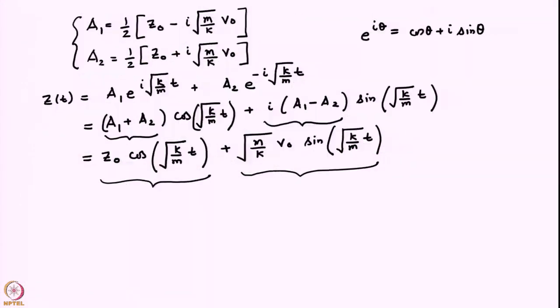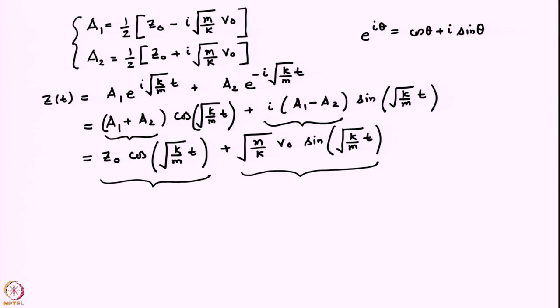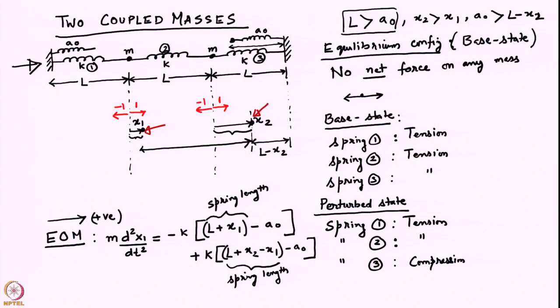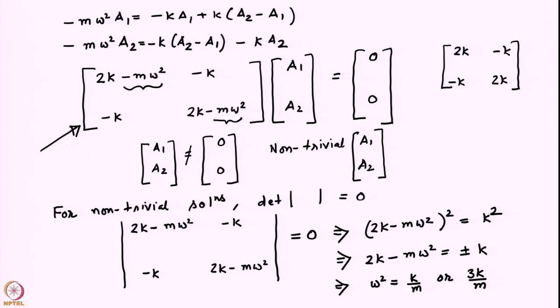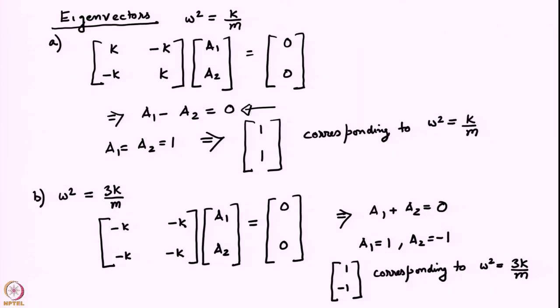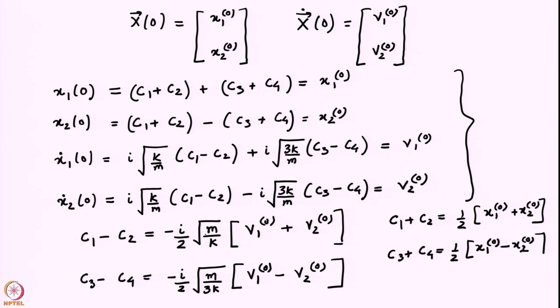Recall that we first looked at a single degree of freedom system, and wrote down the answer using complex exponential notation, and then finally the answer was written in real notation. Similarly, we started with 2 coupled masses connected through 3 springs and wrote down the governing equations. These turned out to be coupled linear ordinary differential equations. We analyzed them using the method of normal modes and found that the frequencies are given by the eigenvalues of a certain matrix which depends on the properties of the system. Once we found those eigenvalues, we computed the corresponding eigenvectors and interpreted their physical meaning.